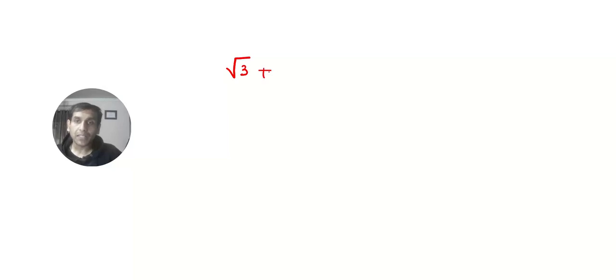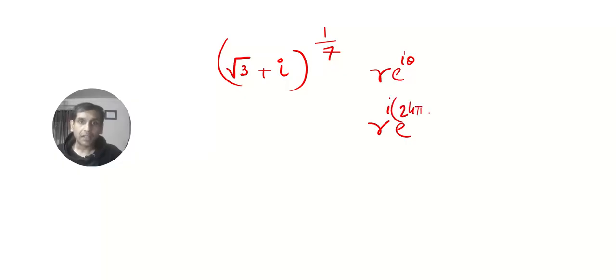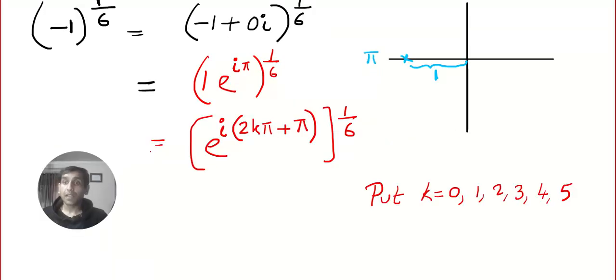Another example: (√3 + i)^(1/7). The procedure is the same — convert to r·e^(iθ), generalize to r·e^(i(2kπ + θ)), raise to the power 1/7, and plug in k = 0, 1, 2, 3, 4, 5, 6 to get all seven 7th roots.